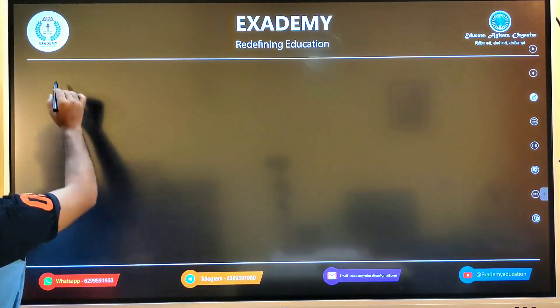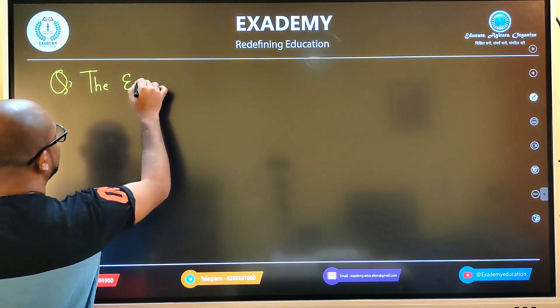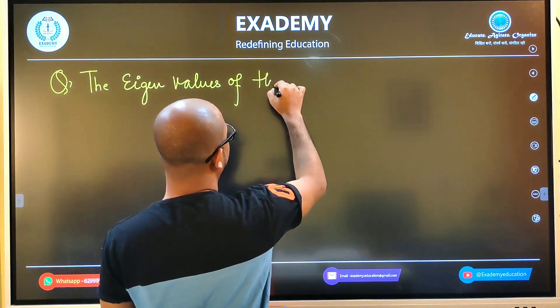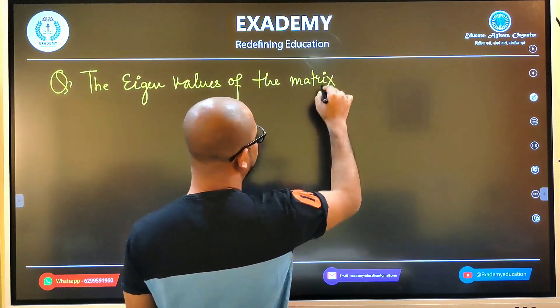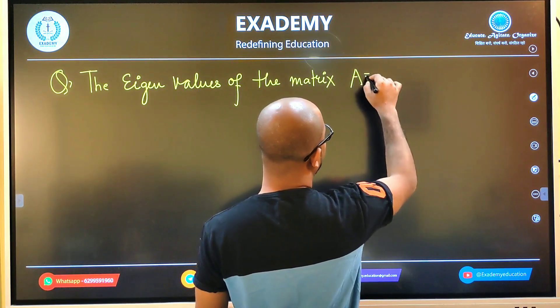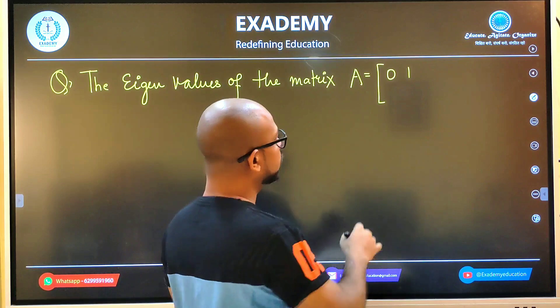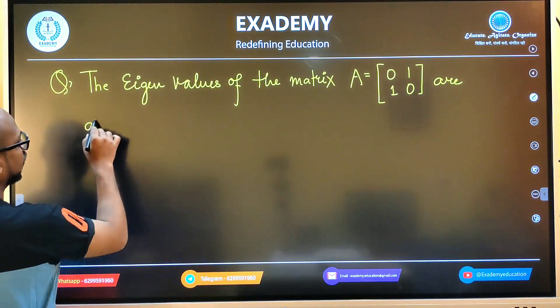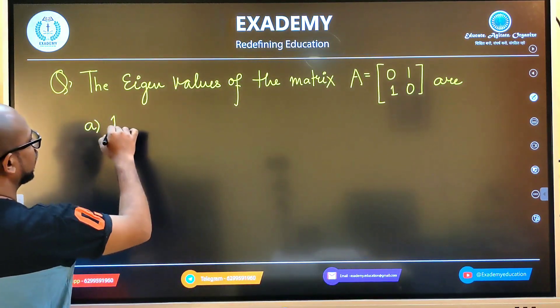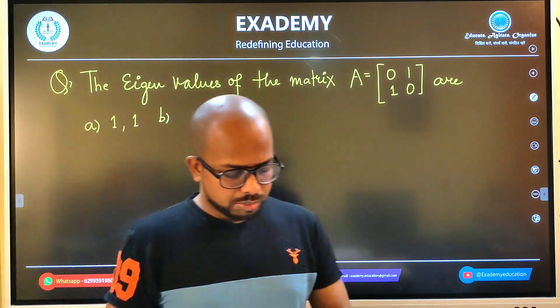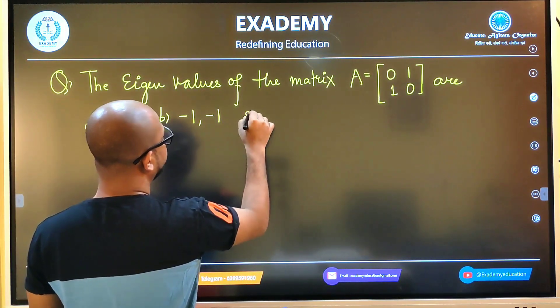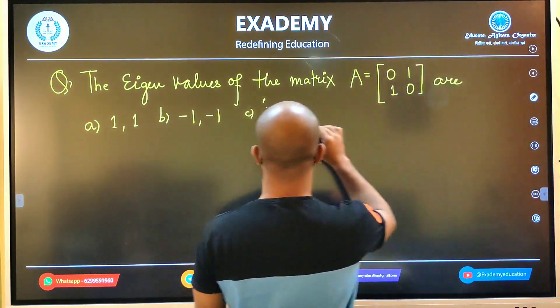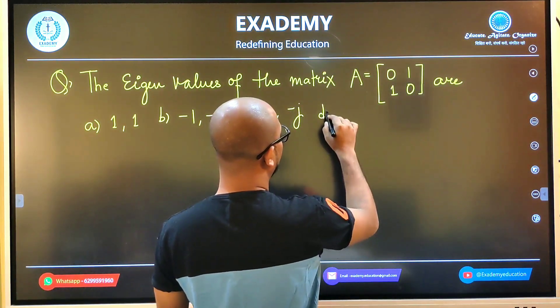Now let's look at the next question. The eigenvalues of the matrix A = [0, 1; 1, 0] are: Option A: 1, 1. Option B: -1, -1. Option C: i, -i. And option D: 1, -1.